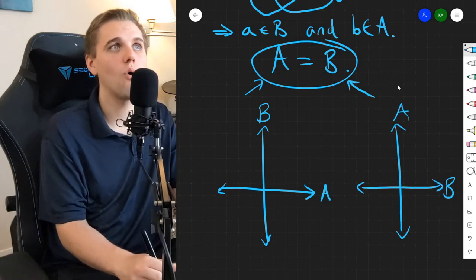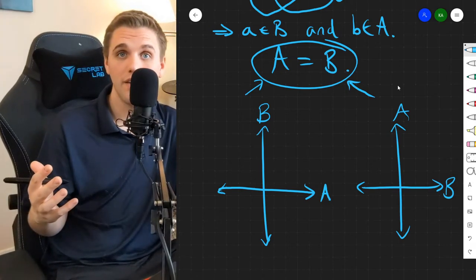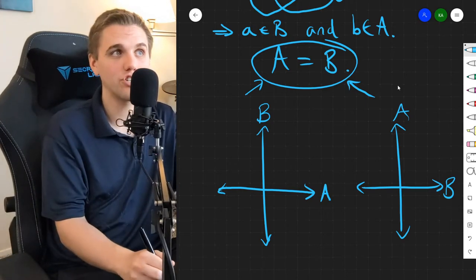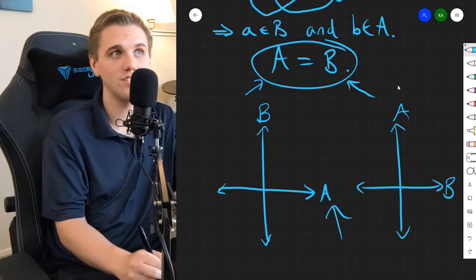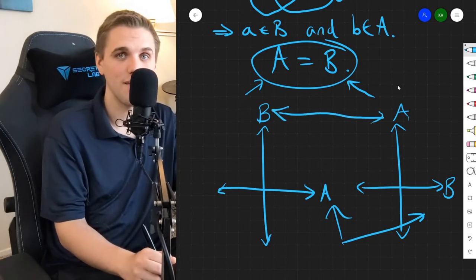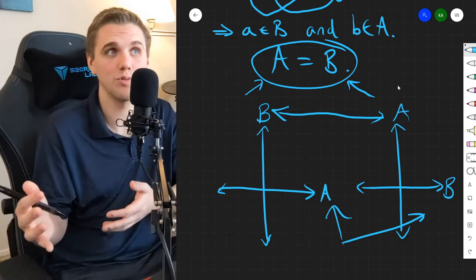So if we want these two planes to be the same, to look the same, or to be the same sets, then we would need to make sure that the horizontal axes are the same and the vertical axes are the same, which is just another way of saying that A equals B.